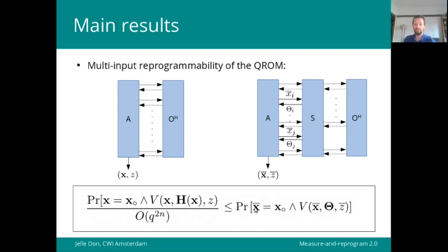and continue the run of the adversary such that its final output will satisfy this same predicate V, but now with respect to these freshly programmed random values theta. We can even compare the probabilities for specific choices of this array, but by summing the inequality we can also make more general statements. This all comes at multiplicative loss of order q to the power 2n,